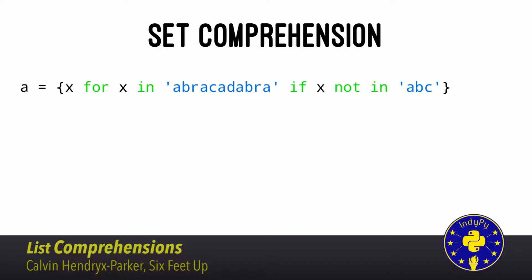What do you expect to happen here? We're doing 'x for x in abracadabra if x not in abc.' Remember when I said about unique items? The answer is R and D — because sets filter out and give us just the unique instances of a character in that string. So that's set comprehensions: very similar to list comprehensions, except you get unique items out.